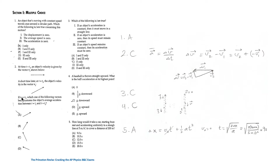If the magnitude of v2 is equal to the magnitude of v1, which of the following vectors best illustrates the object's average acceleration between t1 and t2? The average acceleration equals delta v over delta t, and because delta t is a positive scalar, the direction of the average acceleration is in the same direction as delta v.